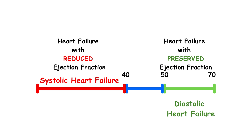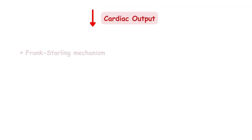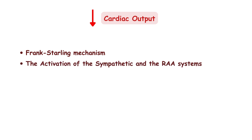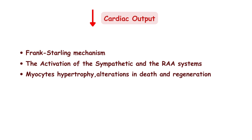Clinically, this distinction is very important because the two types are treated differently. But what they both have in common is reduced cardiac output. When cardiac output is reduced, meaning when the heart fails, many adaptations occur to support heart function. The most important adaptations are the Frank-Starling mechanism, in which the body attempts to increase preload to increase cardiac output; the activation of the sympathetic system and the renin-angiotensin-aldosterone system; and myocyte hypertrophy, death, and regeneration.